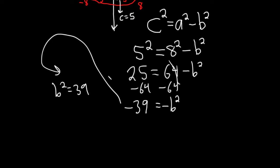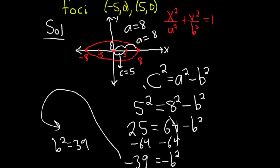And then a was 8, so a² is 64. So the final answer is x² over a², but a is 8, so x²/64 + y²/b², so y²/39 = 1.